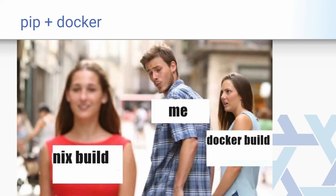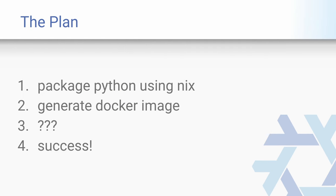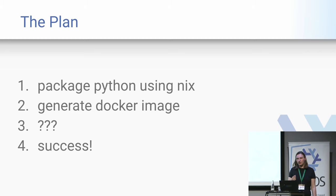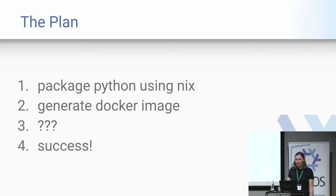Of course we are at NixCon, so I had a better idea. I came up with a plan to do this with Nix — our favorite tool. The plan has four steps. I don't know the third one yet, but the first one is to package Python using Nix: take all of those random dependencies, have an easy way to turn that into a Python environment as a Nix derivation, then use that to generate the Docker image, and hopefully we are all happy.